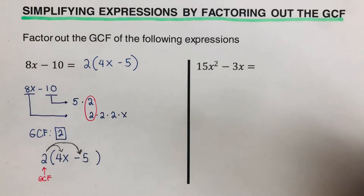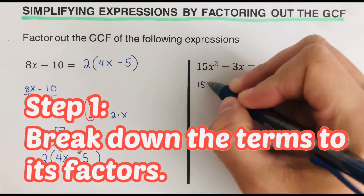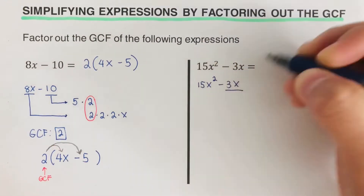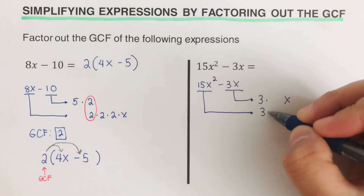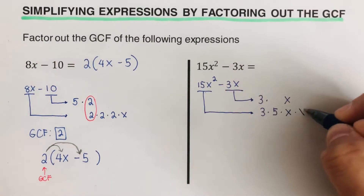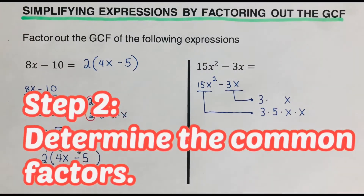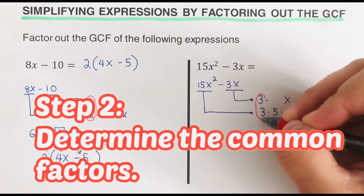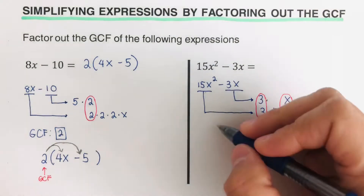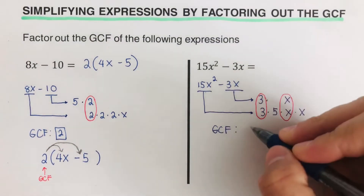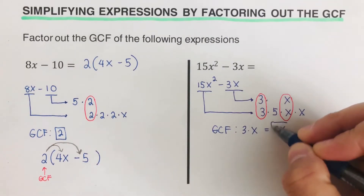Now we go over the next problem. The first step is to break down the terms to their factors. After factoring, we move on to the second step: determine the common factor. We can see that 3 is common to both terms and x is also common to both, so our GCF is 3 times x, which is 3x.